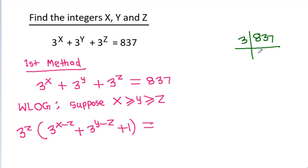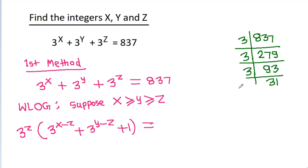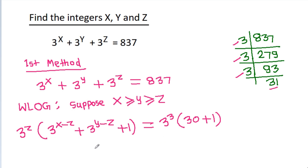Now 837 factors as 3 times 279, then 3 times 93, then 3 times 31, giving 3 cube times 31, which is 3 cube times (30 plus 1). Comparing both sides, 3 power g is a multiple of 3, so it will be equal to 3 cube.